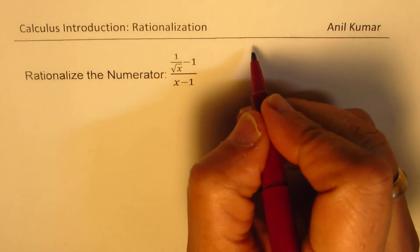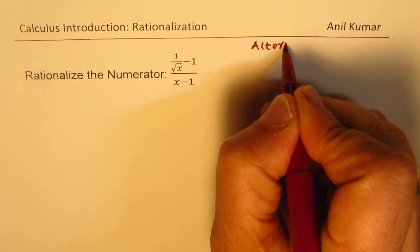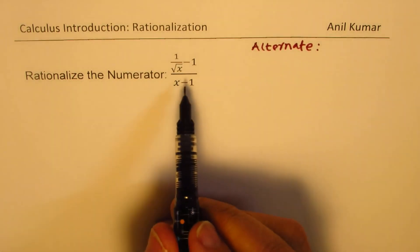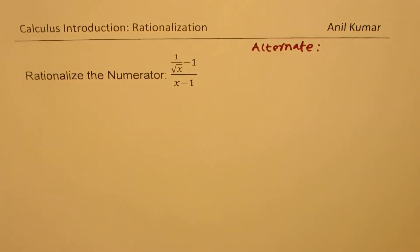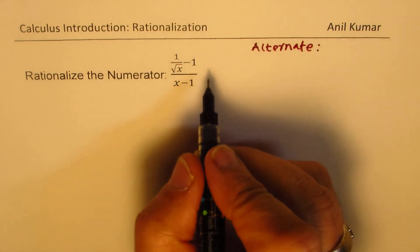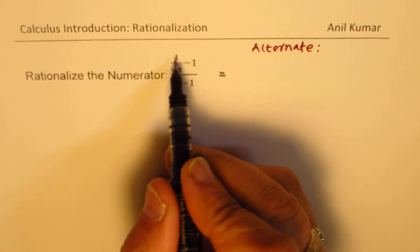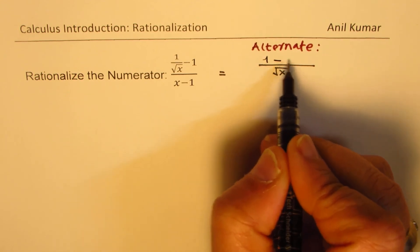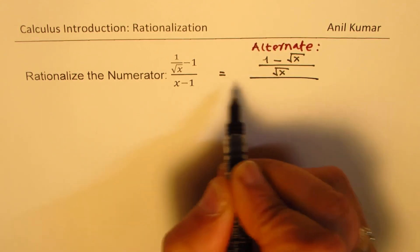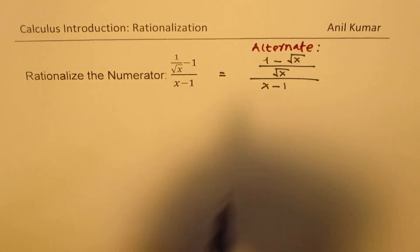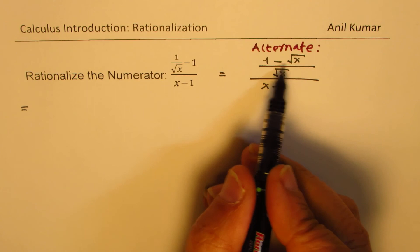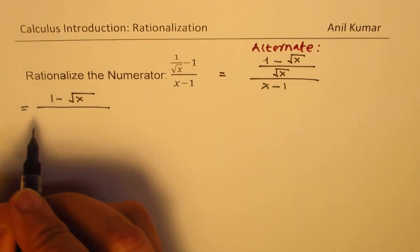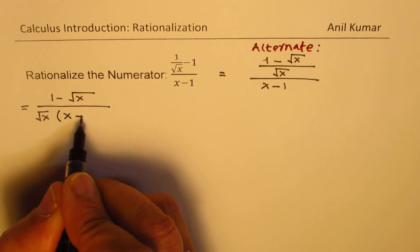Let us talk about the alternate method. I prefer this method over the previous one. The idea here is, first, when you have this kind of an expression, which is itself a multi-layer fraction, let us try to simplify it. What we could have done here is, we first simplify the numerator. You can see the numerator is square root of x taking common, we got 1 minus square root of x, over x minus 1. So I could have directly written this function as 1 minus square root of x in the numerator, divided by square root of x times x minus 1.